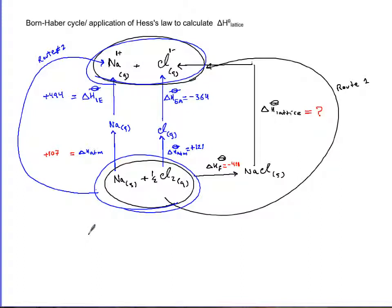So let's just plug in. Delta H lattice is simply equal to, I'm going to add delta H F and then I'm going to take it away. So delta H F plus delta H lattice is equal to delta H atomization of sodium plus delta H atomization of chlorine plus delta H ionization energy of sodium plus delta H electron affinity of chlorine.